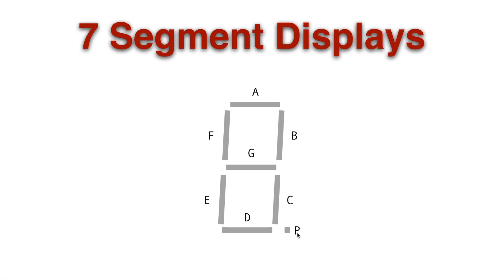The way they name each segment of the seven segment display is to go around in a circle clockwise. So we'll go A, B, C, D, E, F, and then G in the center. And then P is kind of an afterthought, so it has its own name. So when you're looking at most data sheets, this is the way you'll see it.